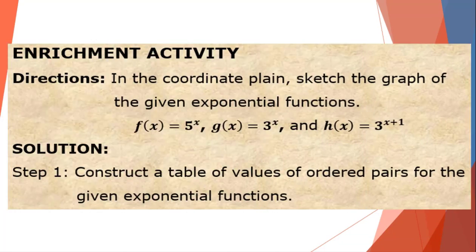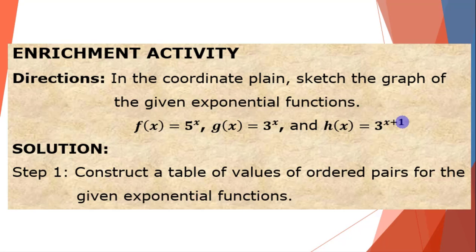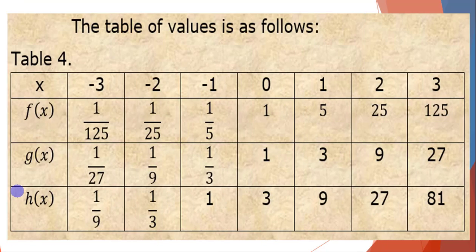For the enrichment activity directions: in the coordinate plane, sketch the graph of the given exponential functions — f(x) = 5 raised to x, g(x) = 3 raised to x, and h(x) = 3 raised to x+1. Step 1: construct the table. We have table 4, with x ranging from −3 to 3, and columns for f(x), g(x), and h(x).